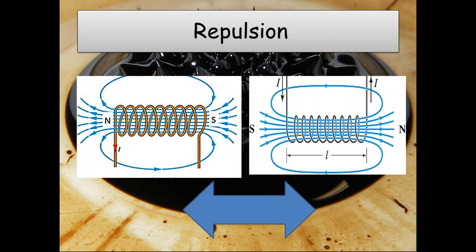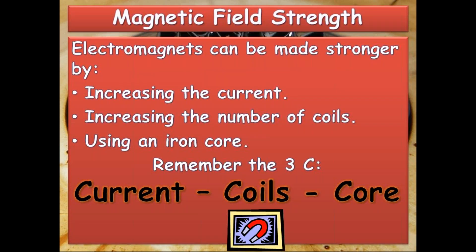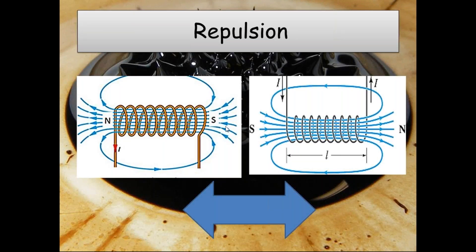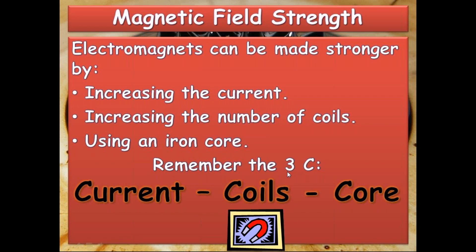The strength of the magnetic field around an electromagnet can be increased or decreased. In order to increase it, we need to increase the current, increase the number of coils around the electromagnet, and use an iron core — the iron placed inside the solenoid. To remember this easily, just memorize the three C's: current, coils, and core. These three factors help us increase the strength of the magnetic field around electromagnets.